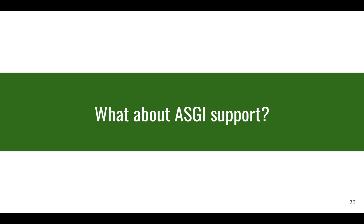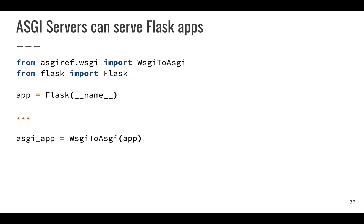What Flask 2 adds is async/await support, but it's not ASGI and not fully async. However, ASGI servers can serve Flask apps — you can switch to an ASGI server if you want. You can use the WSGI-to-ASGI adapter from asgiref, which I'd recommend because it now integrates very well with Flask. Simply wrap your app and then serve the ASGI app using Hypercorn, Uvicorn, Daphne, or any other ASGI server.